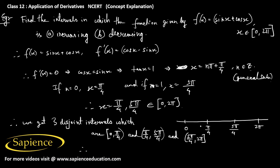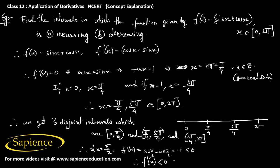Taking a value greater than π/4 but less than 5π/4 — say x = π/2 — f'(π/2) = cos(π/2) - sin(π/2) = 0 - 1 = -1, which is less than 0. So f'(x) < 0 for all x in the open interval (π/4, 5π/4).